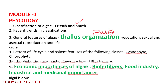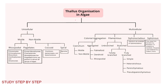Topics include Algae as Biofertilizers and Medical Importance. Thalus organization includes unicellular and multicellular types — unicellular may be motile or non-motile; multicellular may be colonial or aggregated. We have already covered filamentous types including siphonocladas and siphonous. Filamentous type is classified into unbranched and branched; branched is further classified into falsely branched and truly branched. Truly branched is classified into simple, heterotrichous, parenchymatous, and pseudoparenchymatous.